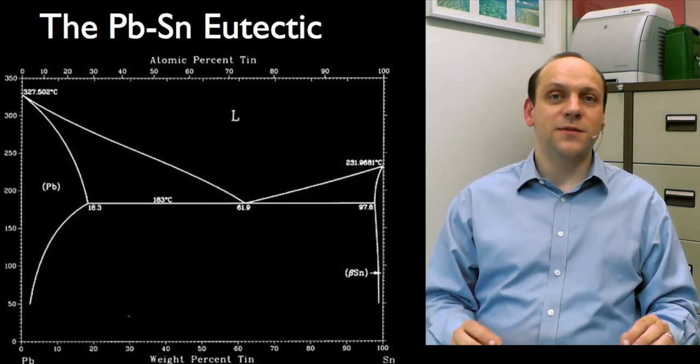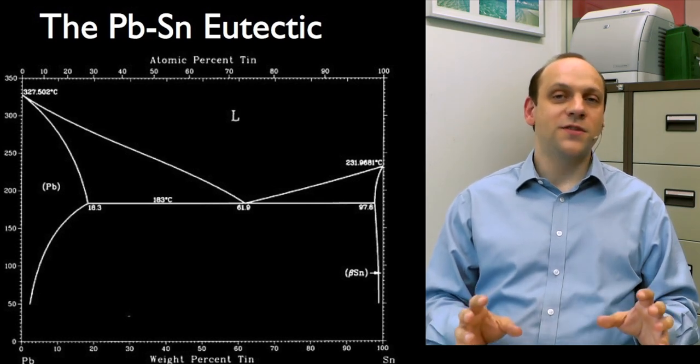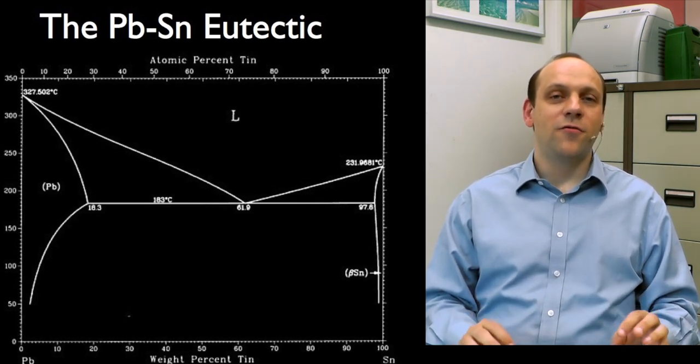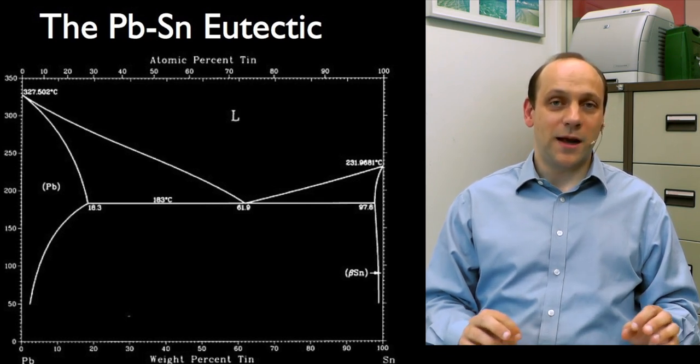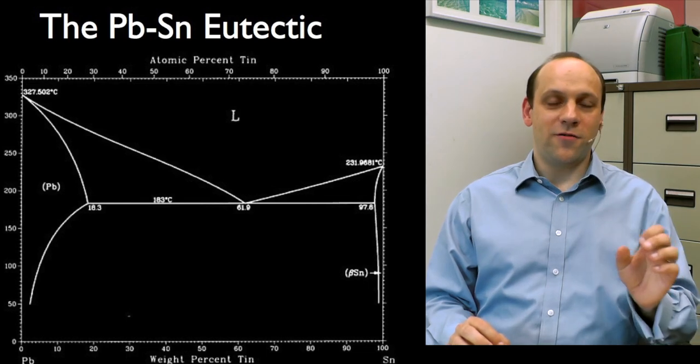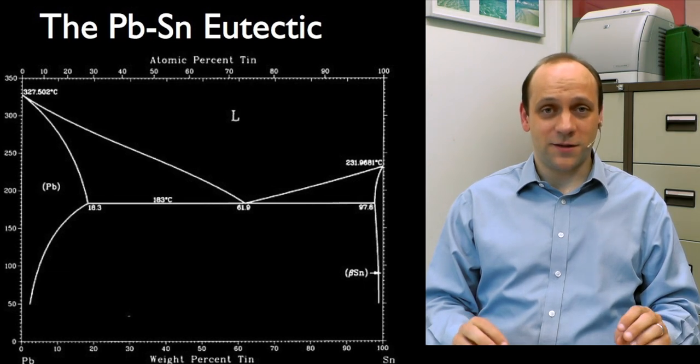And typically, phase diagrams are presented like this. This is taken from the ASTM website, and they're typically presented in this fashion. So we only write down the phases in the single phase regions, and we let the user recreate the two phase or more, if you're in a ternary or something like that, the two phase regions.